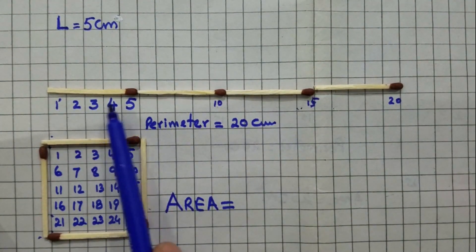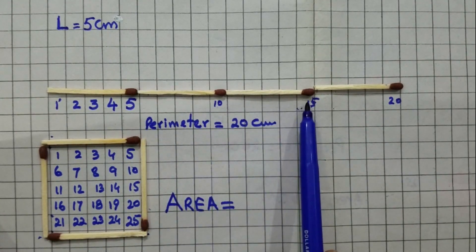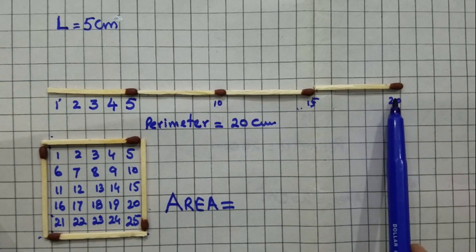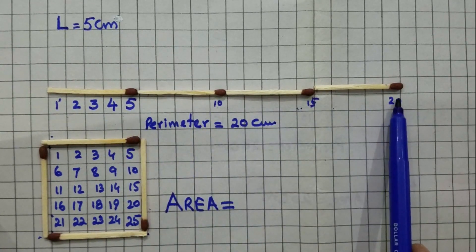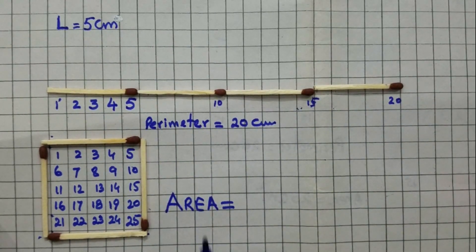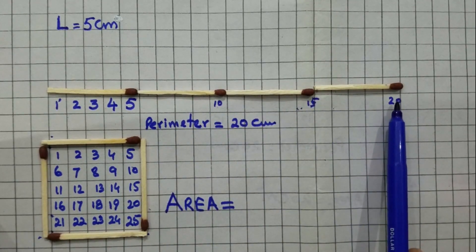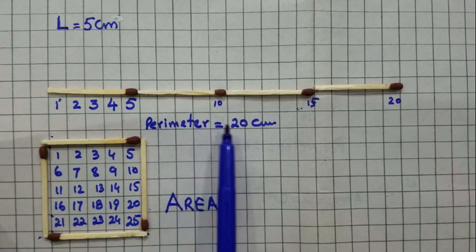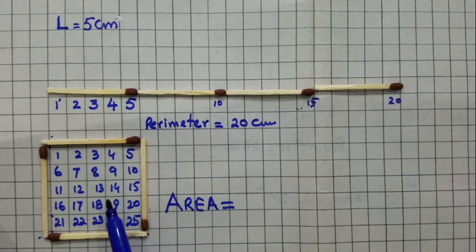This is five centimeter long, this is five centimeter long — total 10. This is five — total 15. This is five centimeter long and total we get 20 centimeter. 5, 10, 15, 20 centimeter long. All the four matchsticks are equal to 20 centimeter long. Therefore the perimeter is equal to 20 centimeter. We get the perimeter which is equal to 20 centimeter of a square.